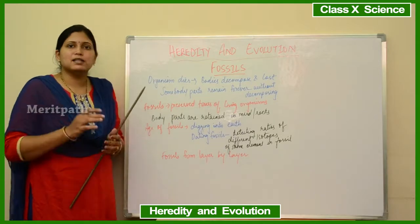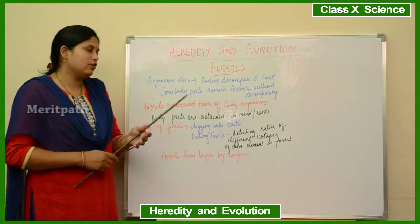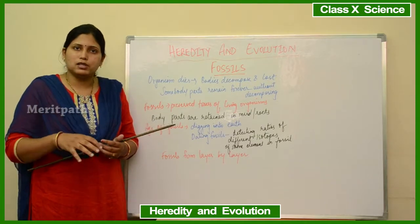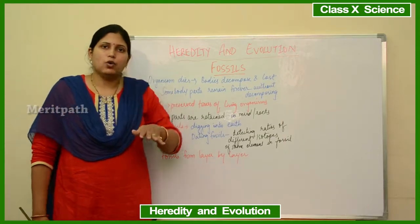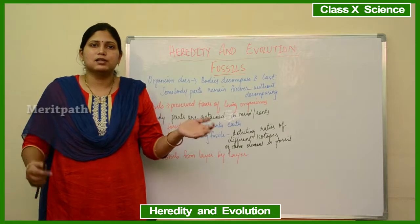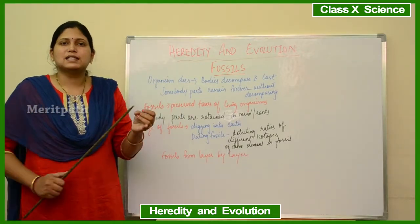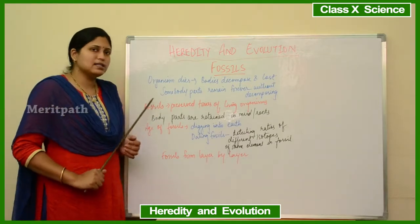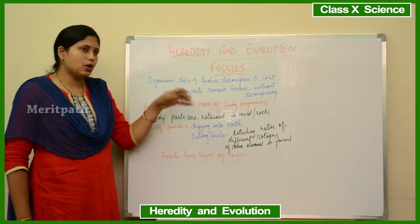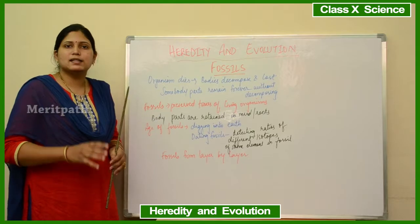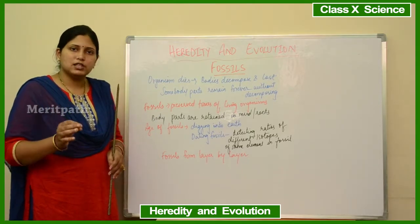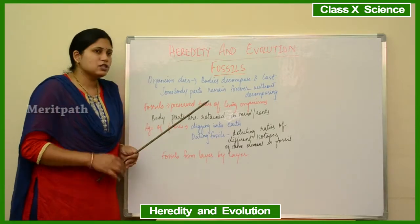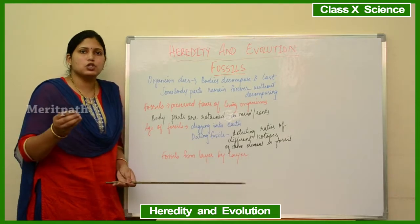Sometimes, body parts remain without decomposing — for example, the skeleton of a dinosaur. It didn't decompose and remained forever. Slowly, sand gets deposited over it, and then another organism's skeleton gets deposited on top. Over hundreds of years, sand, stone, and rock develop over these remains, and they stay preserved in the mud. The definition of a fossil is the preserved traces of a living organism — body parts retained inside mud or rocks.